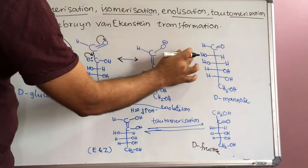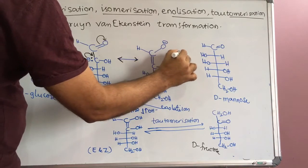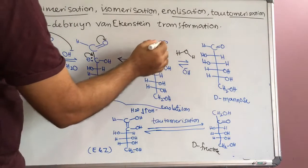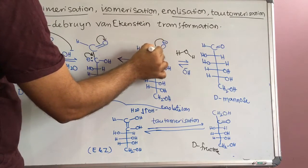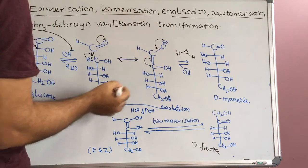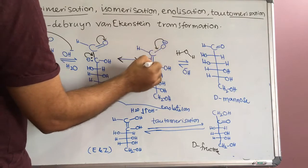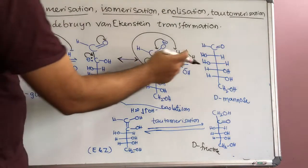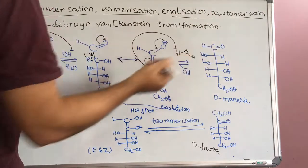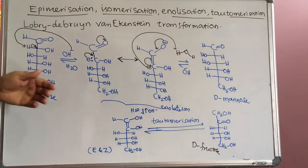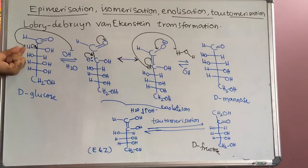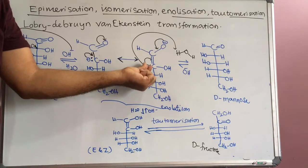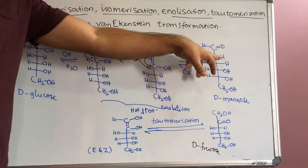When H₂O is present, the negative charge will be moved and a hydrogen atom can be donated back. The hydrogen may add to the left side or the right side, because the intermediate is a planar structure. Then it may convert toward the left or right side.